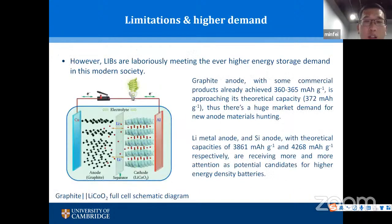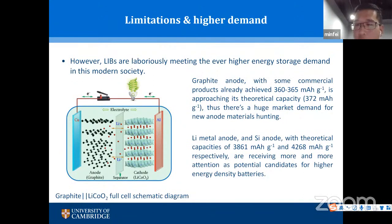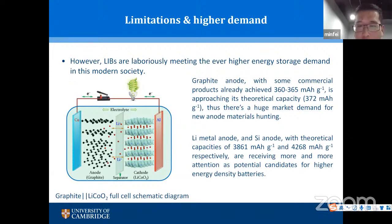However, there are huge limitations for the lithium-ion battery. The commercial anode used is graphite, which has a very low theoretical capacity of 372 mAh/g. We have already achieved 360 to 365 mAh/g, leaving very little room for improvement. We really need to look for a better anode to meet ever-higher energy demands.